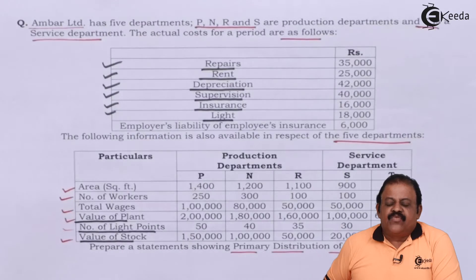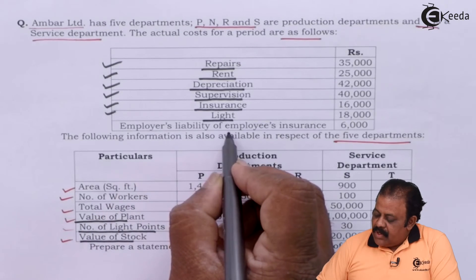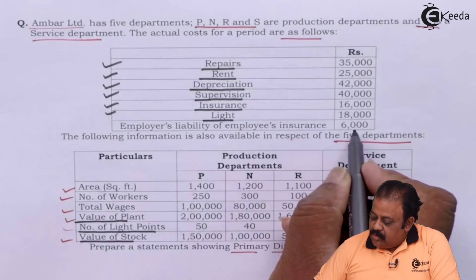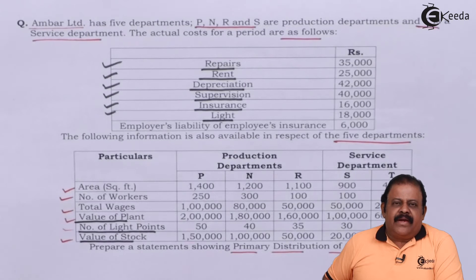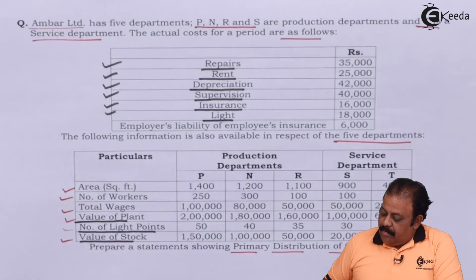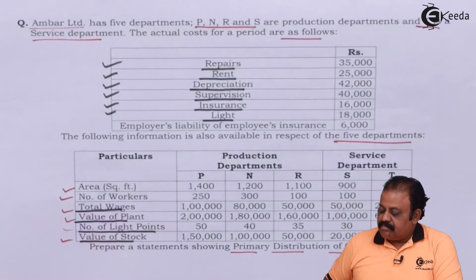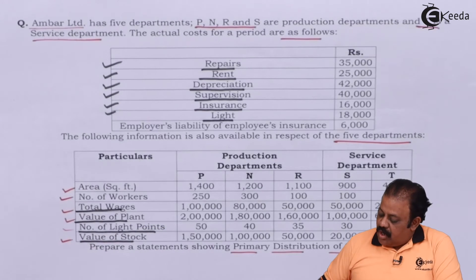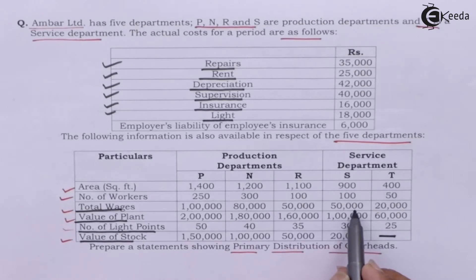Next we have employer's liability of employees insurance, Rs. 6,000. This will be allocated based on amount of total wages, that is in the ratio of 1,00,000 : 80,000 : 50,000 : 50,000 : 20,000.